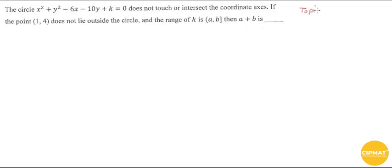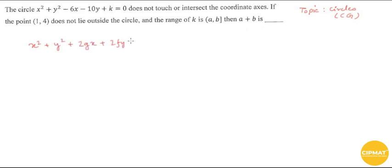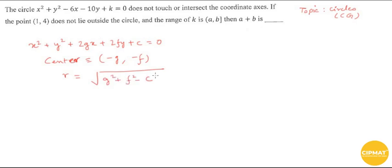Let me revise the key concepts before diving into the question. The general equation of any circle is x² + y² + 2gx + 2fy + c = 0. Here, the center of the circle is given by (-g, -f) and the radius is given by √(g² + f² - c).